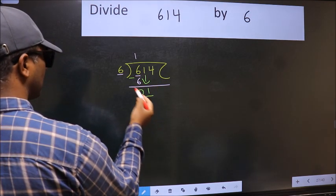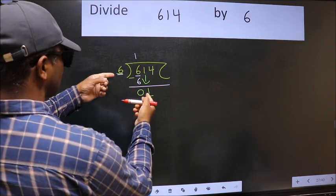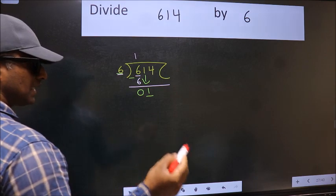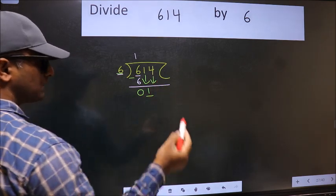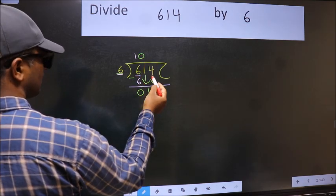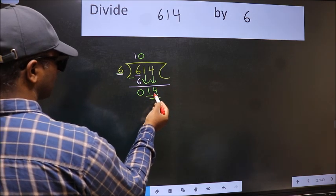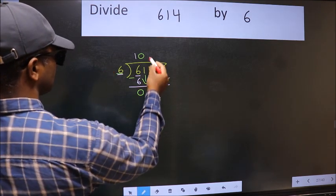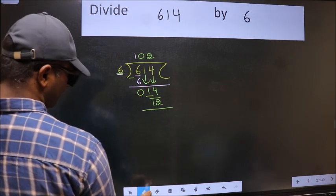Now here we have one and here six. One is smaller than six, so we should bring down the second number. The rule to bring down the second number is we should put zero here, then only we can bring this number down. Now 14. A number close to 14 in the six table is six twos, twelve.